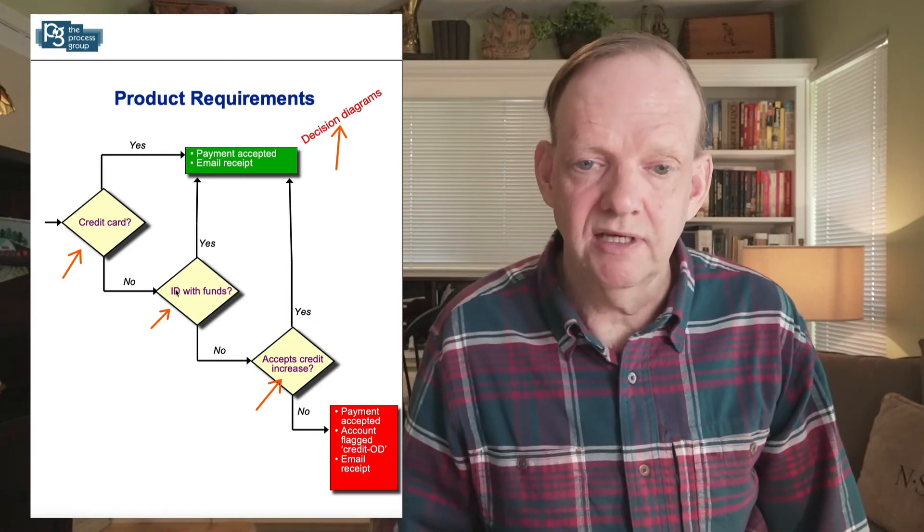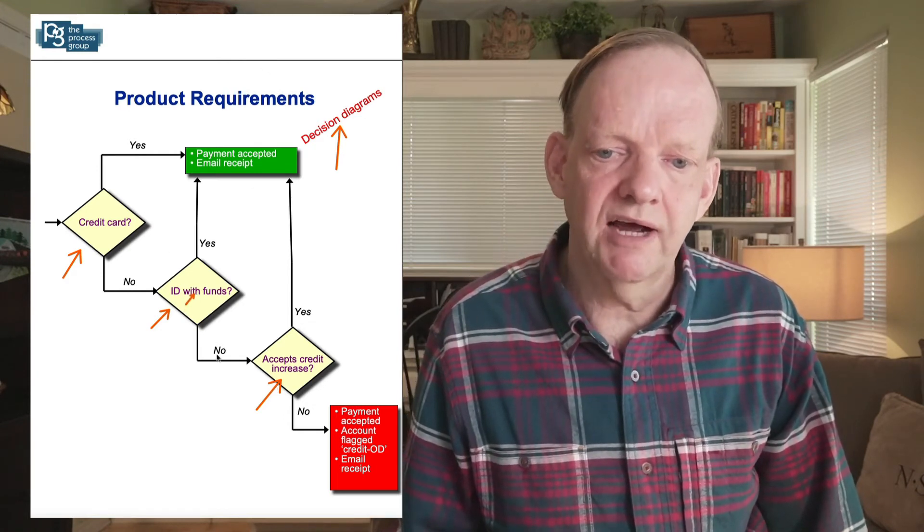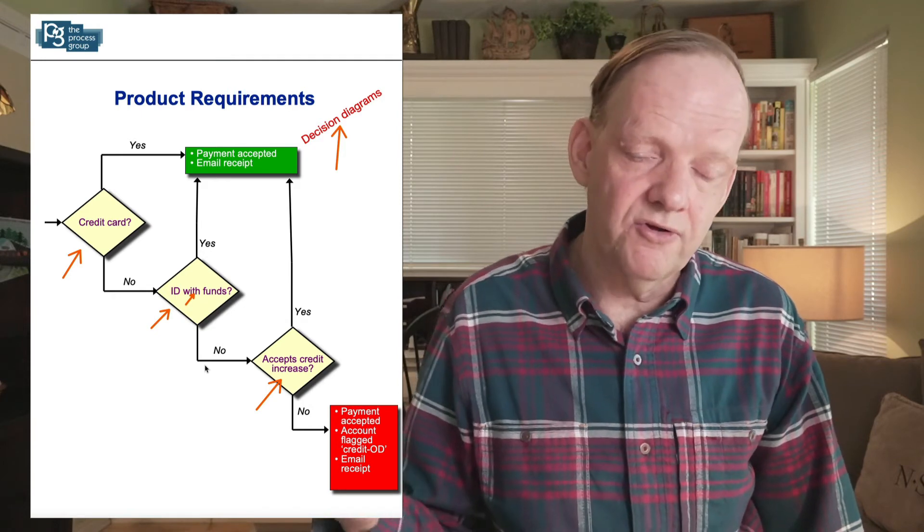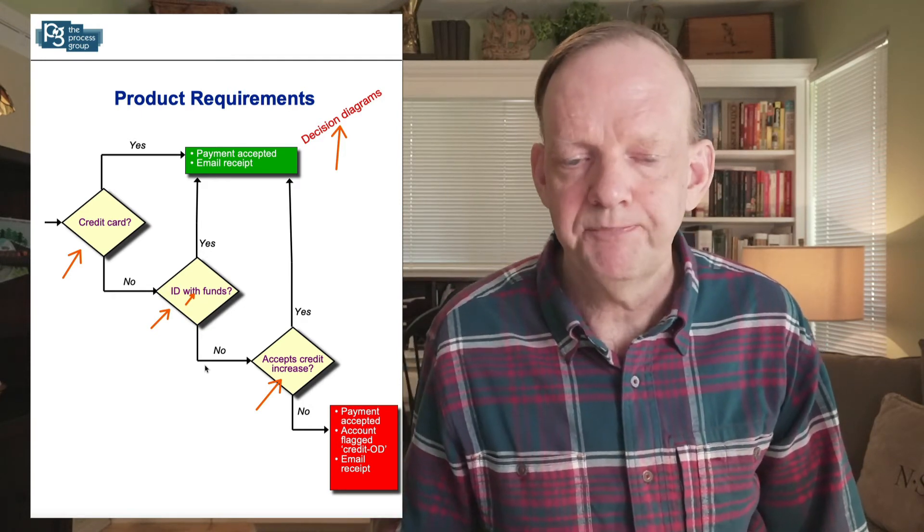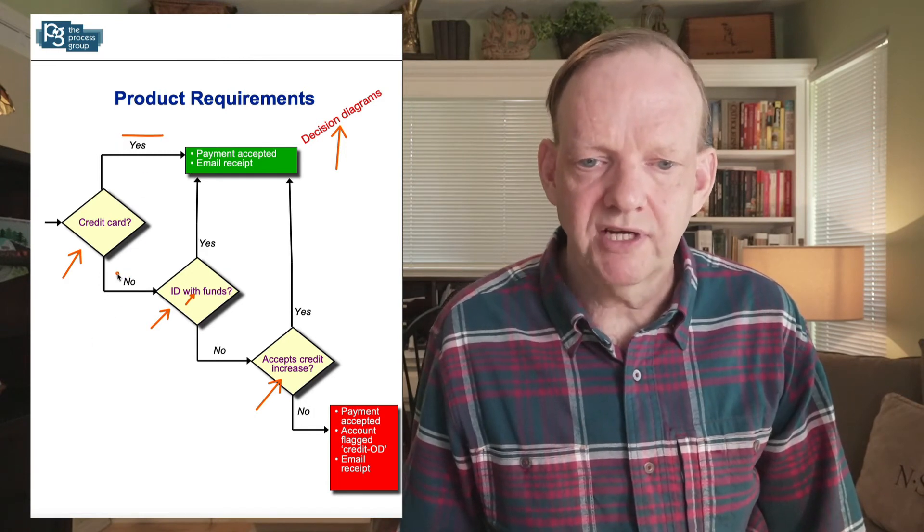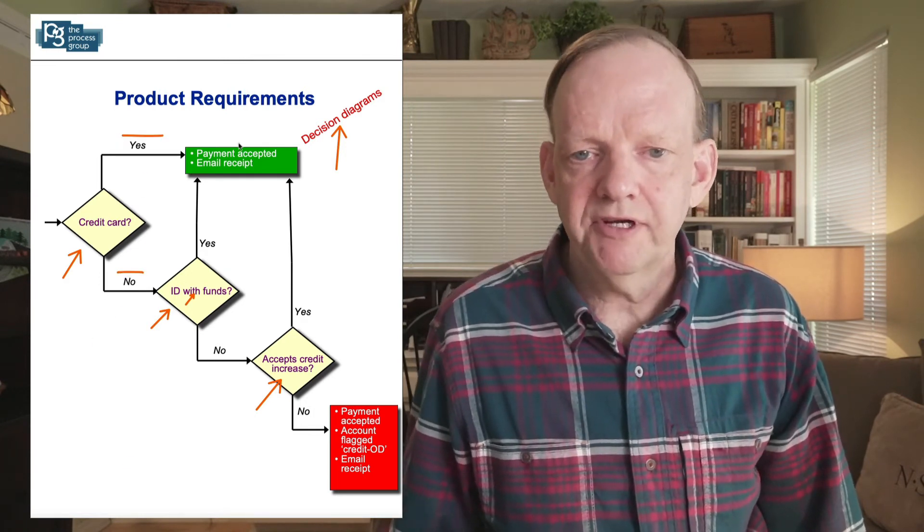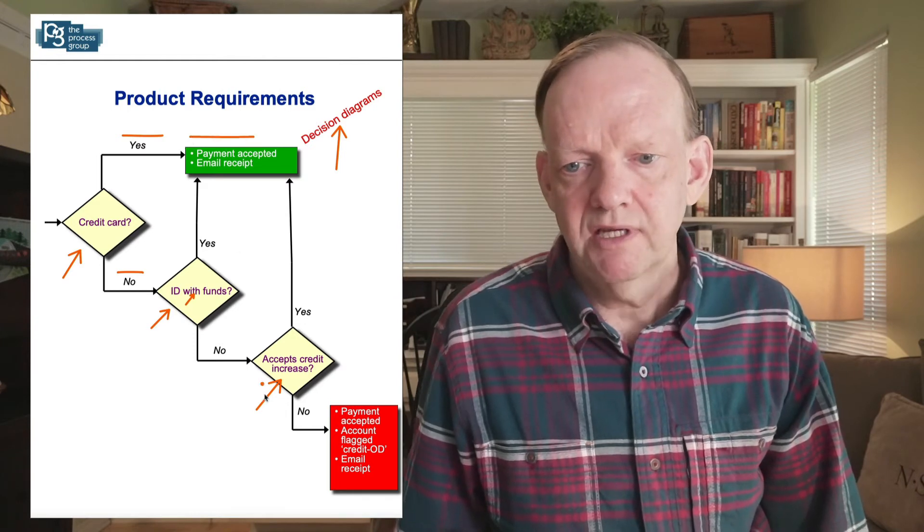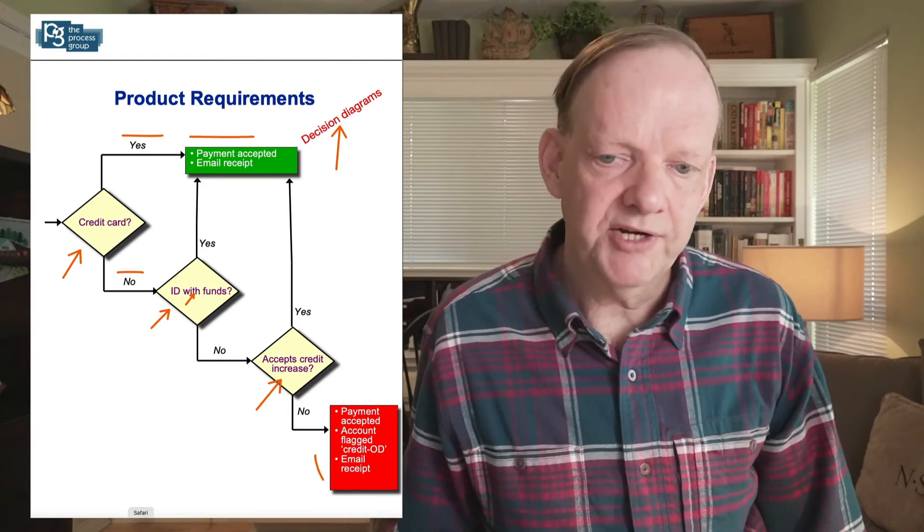There's actually four in ours. We have three diamonds here. We have ID with funds and ID without funds, so this goes to yes and no, which covers two of the options there. And then we can clearly say what happens if there's a yes and what happens if there's a no, and then figure out these outputs over here and when they actually occur.